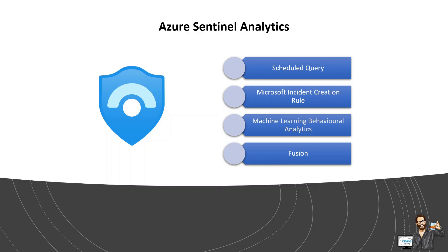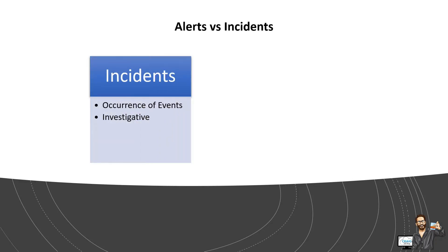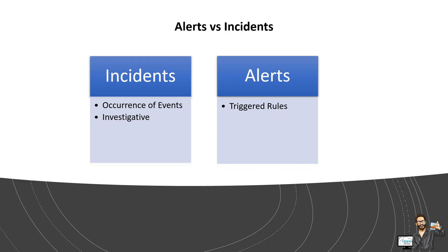Before we dive deeper, I want to clarify a question I get asked all the time: what is the difference between an alert and an incident? Incidents are an occurrence of events that may potentially impact the confidentiality, integrity, or availability of a system. Incidents can be investigated and drilled down into, including insights into usernames, devices involved, IP addresses, command lines, processes, etc. Alerts are triggered rules from a collection of events. For example, you might want to be alerted that a user has been added to the domain admins group, but not actually create an incident — we class these as day-to-day managerial tasks.